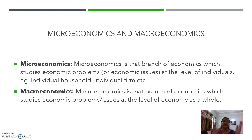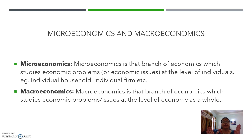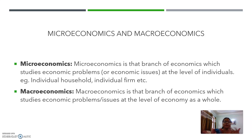Macroeconomics में हम national income, determination of income, problem of employment — ये सब economy as a whole पढ़ते हैं। Microeconomics को general price theory भी कहते हैं, जबकि macroeconomics को income theory भी कहते हैं। Microeconomics में theory of demand, theory of supply, consumer behavior, producer behavior पढ़ते हैं; जबकि determination of income and employment, money supply, calculation of national income — ये सब macroeconomics में पढ़ते हैं, जो आप class 12 में पढ़ेंगे।